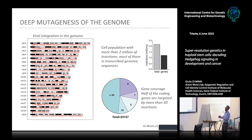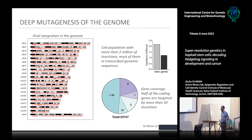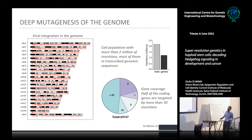Using insertional mutagenesis, we are able to deeply mutagenize the mouse genome, as shown in a figure where each red line represents an independent integration event across all chromosomes. We calculated that we generated a cell population with more than two million insertions, the majority of which target genes. In conclusion, transcribed genes are characterized by at least 50 independent integration events.